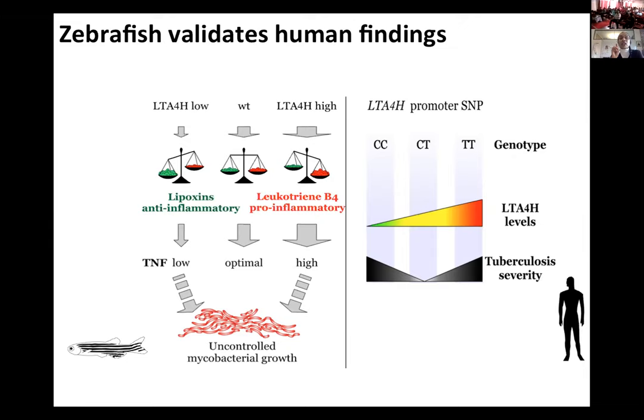The leukotriene A4 high state — the TT — was just as bad. We could only assume it was making too much of the enzyme, causing inflammation that was overoptimal and therefore deleterious. But at this point we had no mechanistic details — only human genetic association data. Let me show you the data.